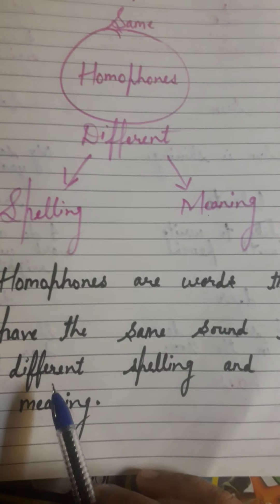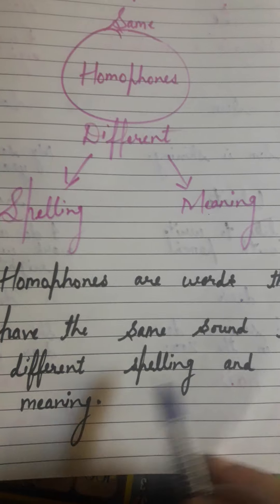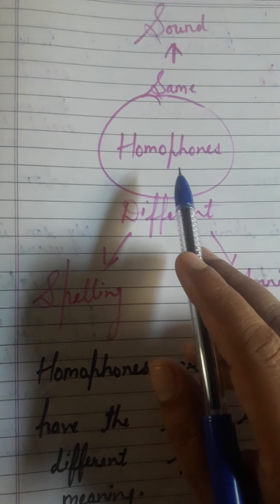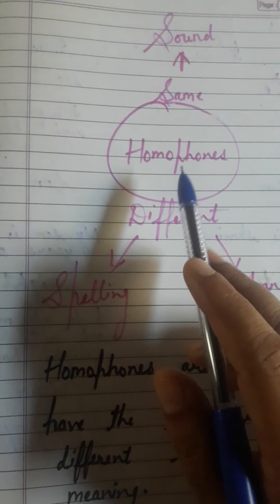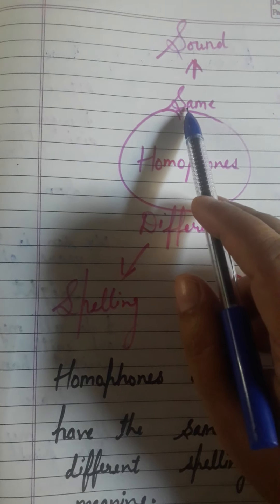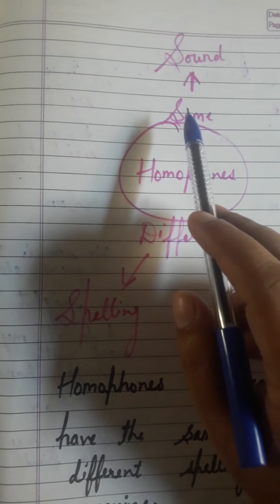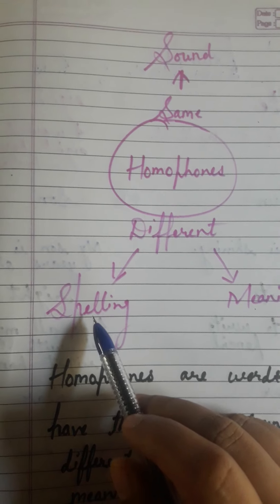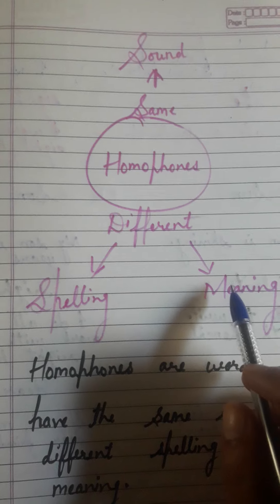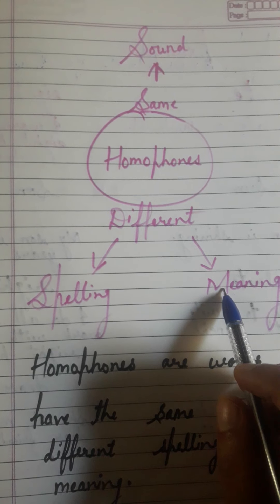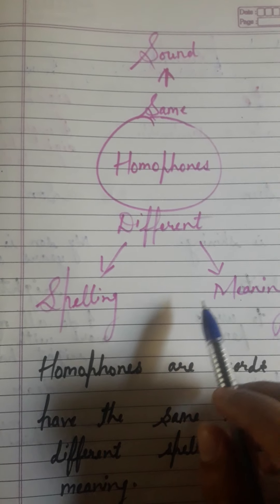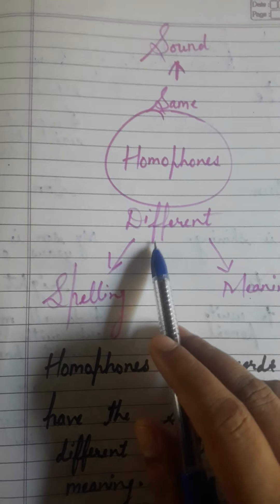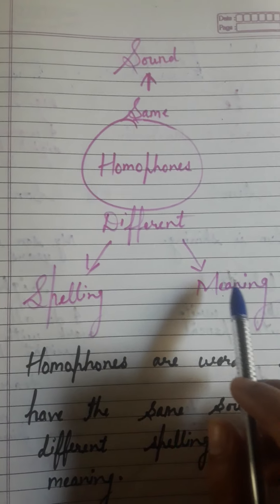Children, homophones wo words hote hain jinki sound same hoti hai, means jinki awaaz same hai, but unke spelling different hoti hai aur unke meaning bhi different hoti hai. So homophones are words which have same sound but different spelling and meaning.